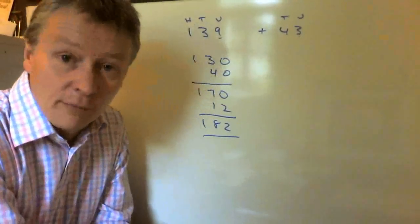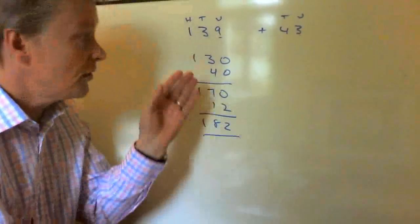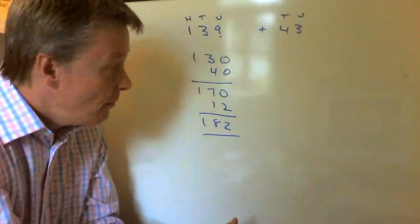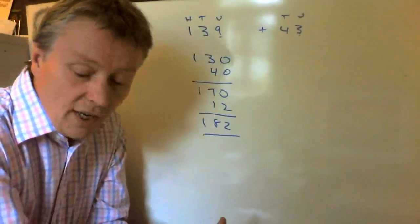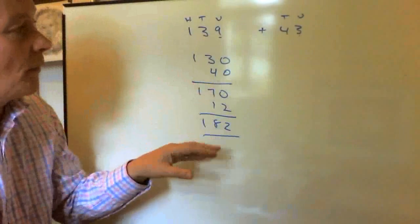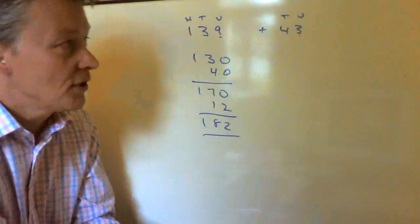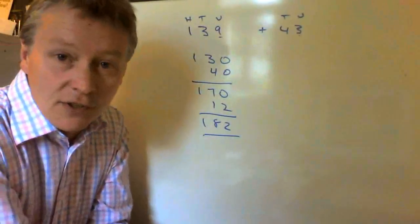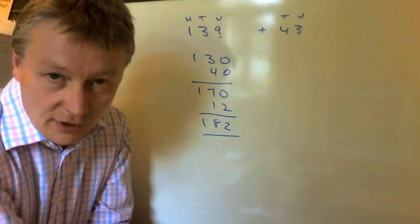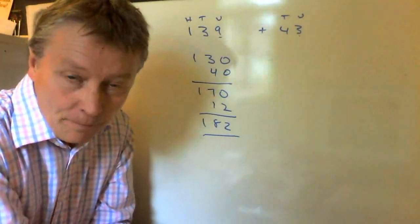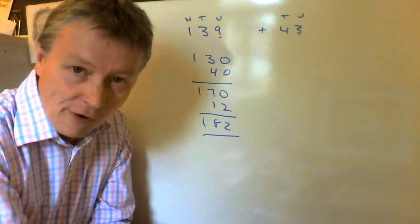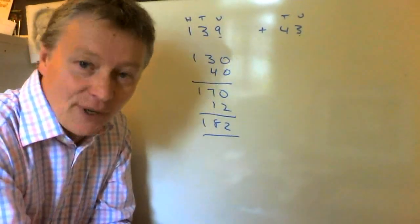I've broken it down into its component parts and used that to add the two numbers together. It's a method that works fairly well, and there's no problem at all with using it to calculate how to add two numbers together. If you look at some of the other videos, I'll talk about a more formal method as well.